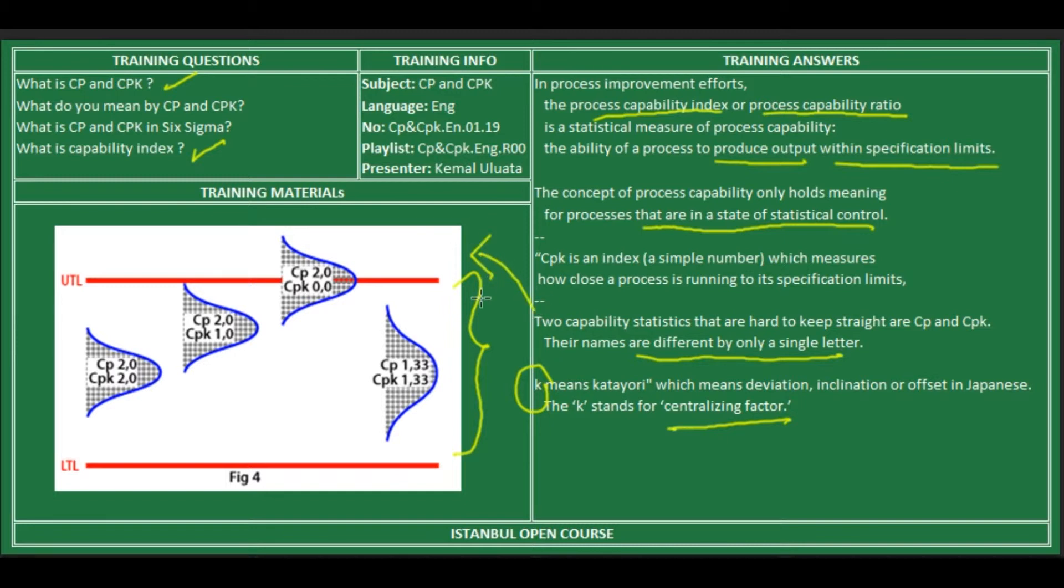For example, when we see the figure, in this process the process variation and CPK value is 1.0, but this process is more centered, so the CPK value is bigger than this one, which is 1.33.